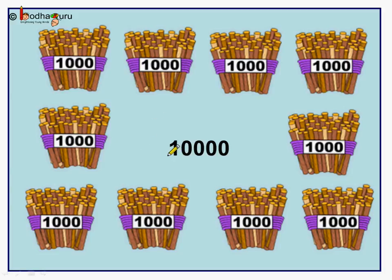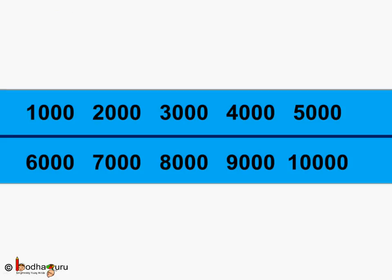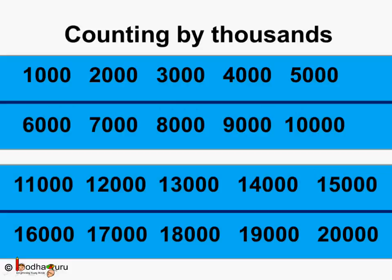So ten thousand has one, two, three, four, five digits. Look, how were we counting? One thousand, two thousand, three thousand, four thousand, five thousand, six thousand, seven thousand, eight thousand, nine thousand and ten thousand. We are counting by thousands, so this is called counting by thousand.